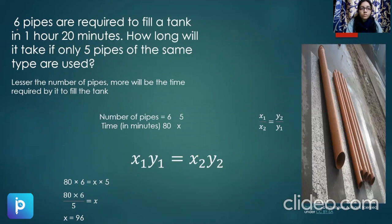One example to it is, six pipes are required to fill the tank in one hour 20 minutes. And how long will five pipes take to complete that work? We can see that six is requiring 80 minutes and five will require how much? Simply putting it in the formula and we'll be getting our answer as 96.